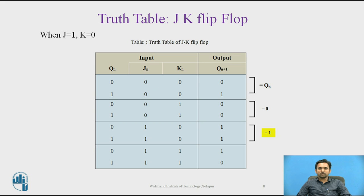When J equals 1 and K equals 0, the AND gate corresponding to K becomes 1. Therefore, this condition will set the flip-flop, representing the set state.